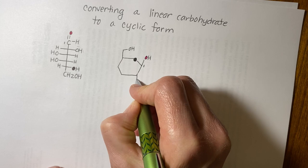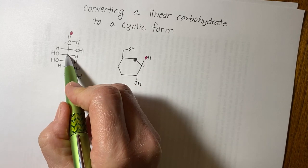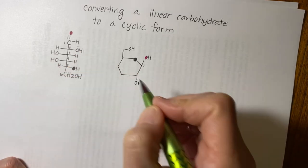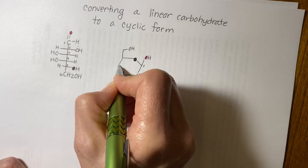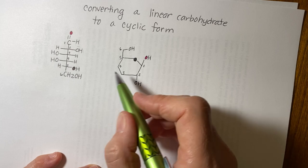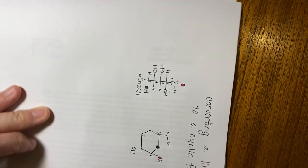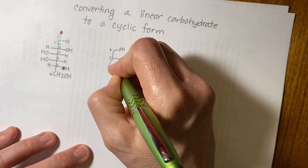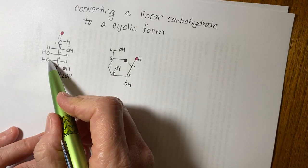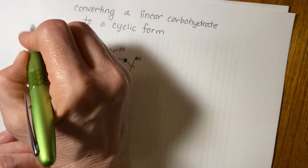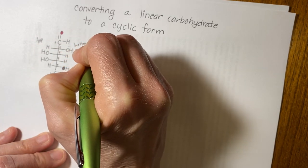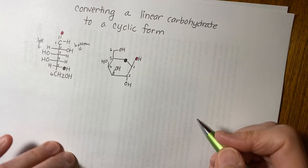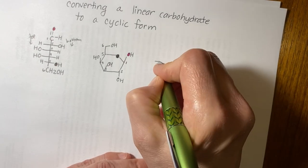Carbon two is on the bottom, or to the right of the plane of the ring, so it's going to go down. Carbon three is on the top of the ring, so it will point up. Its neighbor carbon four is also on the left or top side of the ring, so it's going to be up as well.